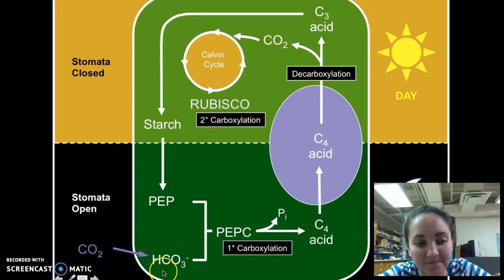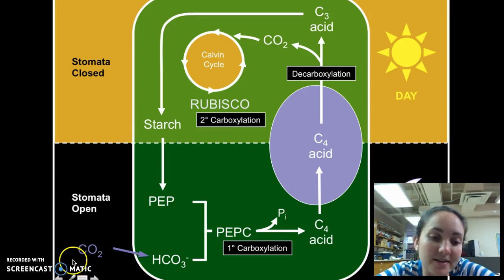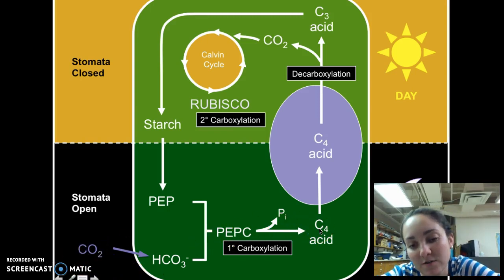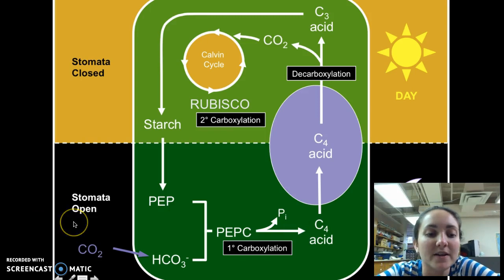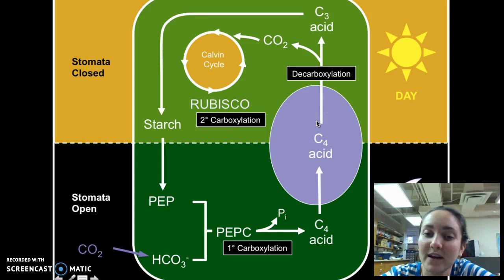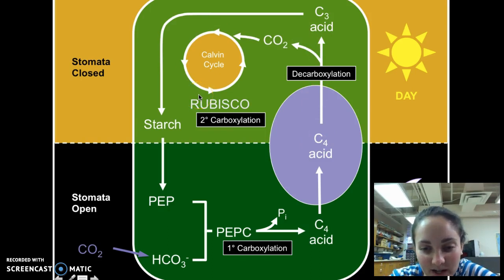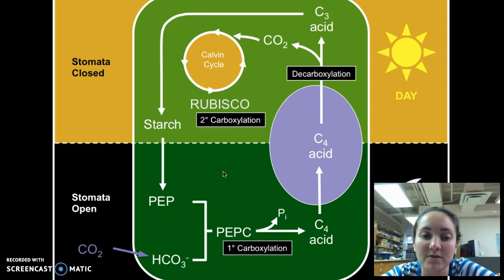The adaptation particular to CAM photosynthesis plants is that they're able to store their carbon dioxide as a four-carbon molecule — we can just call that C4. What the stomata do at night is take in carbon dioxide and convert it to C4. That C4 allows it to be stored as little chunks of carbon to be used during the day. So the actual adaptation is the C4 molecule.